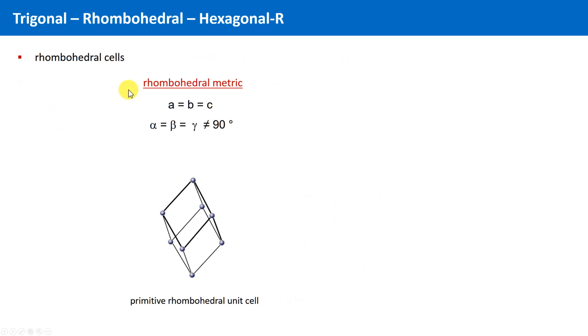The metric of a rhombohedral unit cell is specified as follows. We have the lattice constants a equals b equals c. It reminds us of the cubic crystal system.